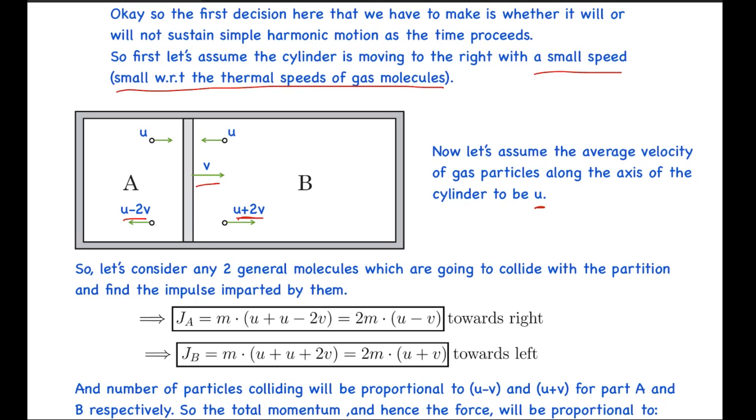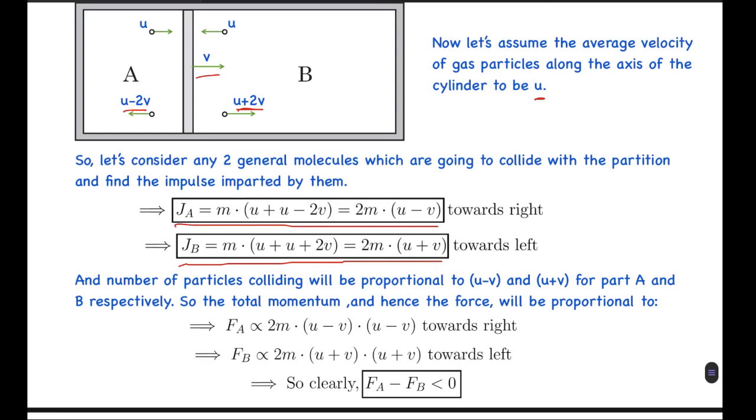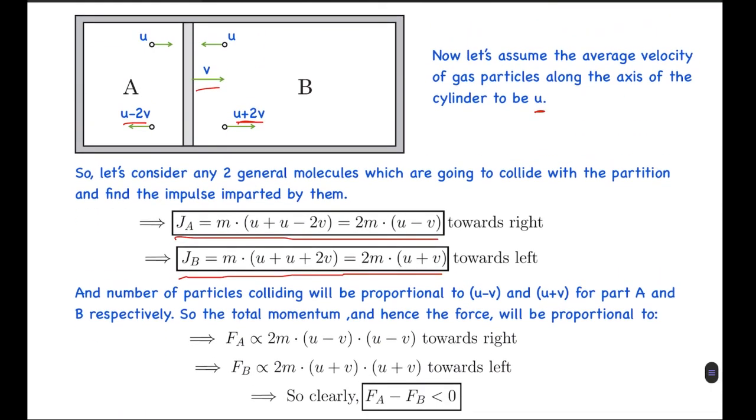The impulse imparted by the molecules, JA will be M times (U + U - 2V) which equals 2M(U - V) towards the right direction. Similarly the impulse due to the second particle will be M times (U + U + 2V) which equals 2M(U + V) in the left direction. The number of particles colliding will be proportional to (U-V) and (U+V).